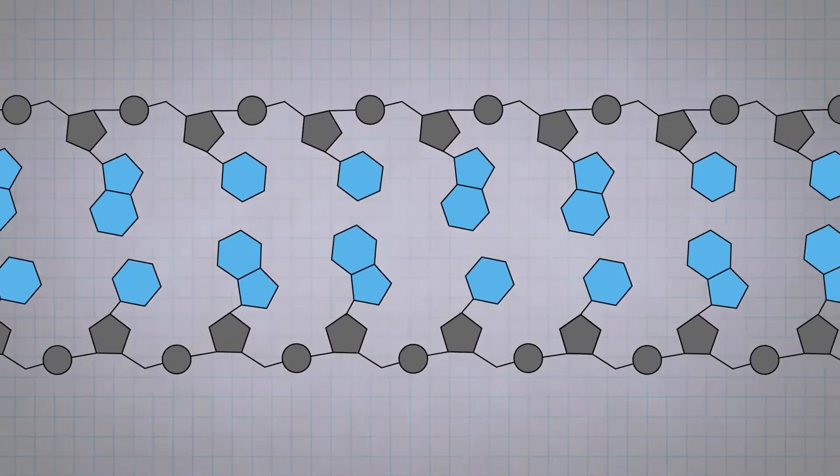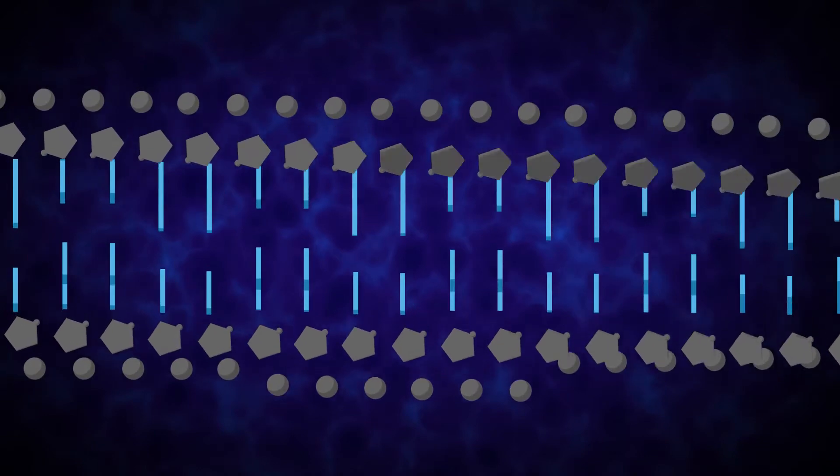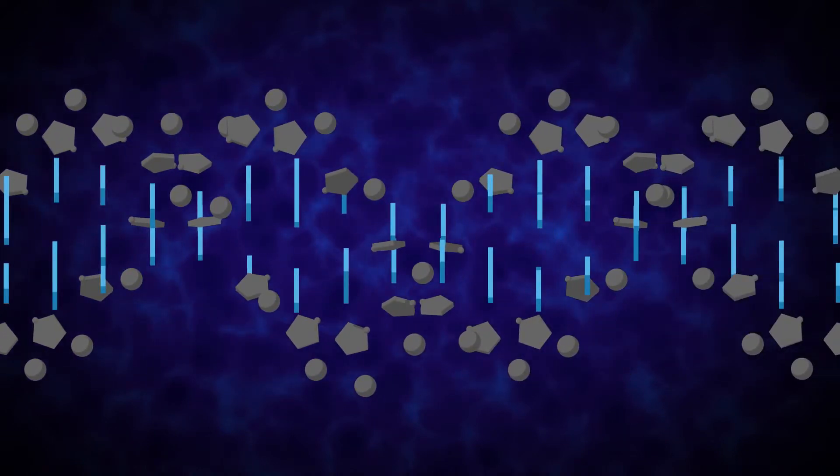The double helix structure of DNA is highly regular. Each turn of the helix measures approximately 10 base pairs.